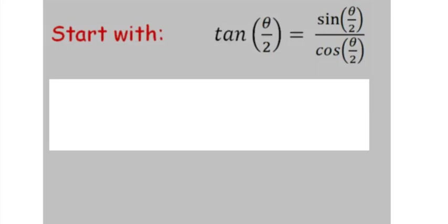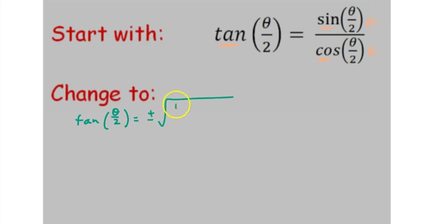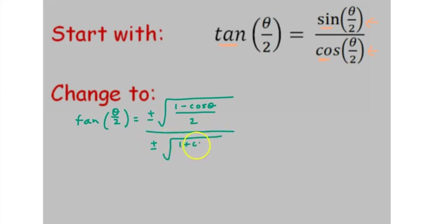Let's figure out the identity for the tangent of a half angle. And of course we know that tangent is sine over cosine. So if we insert our sine half angle identity and our cosine half angle identity into this quotient, we have tangent of theta over 2 equals plus or minus the square root of 1 minus cosine theta over 2, divided by plus or minus the square root of 1 plus cosine theta over 2.